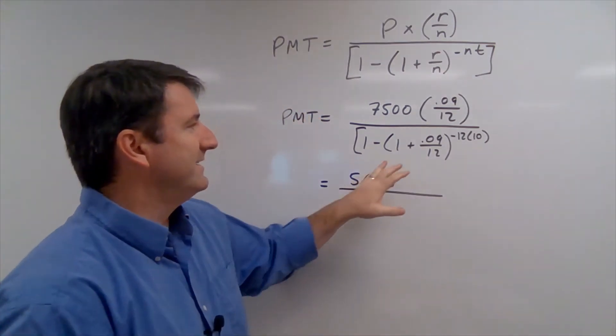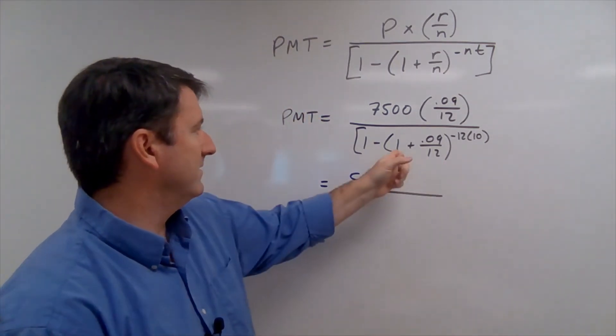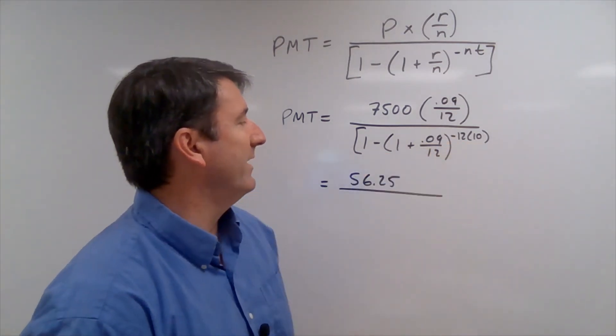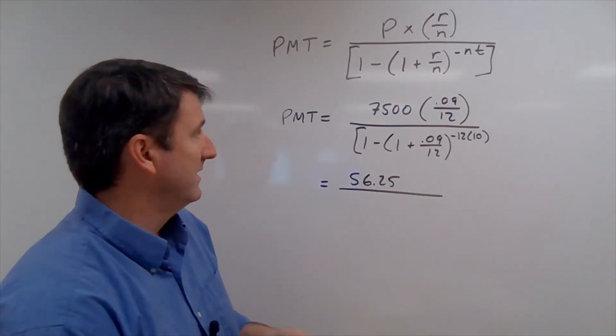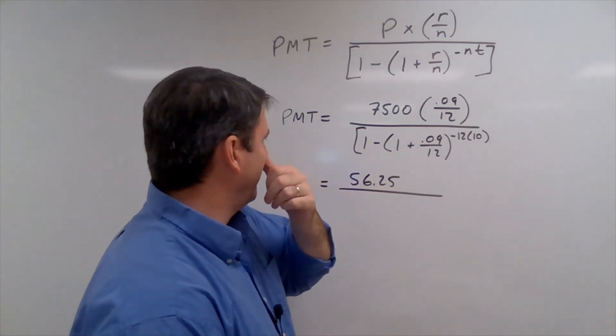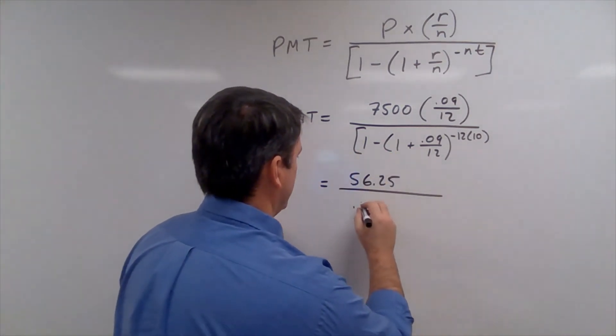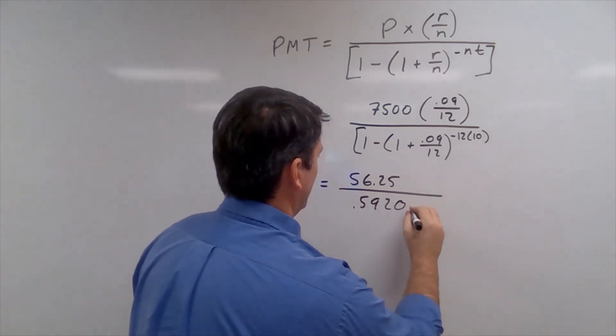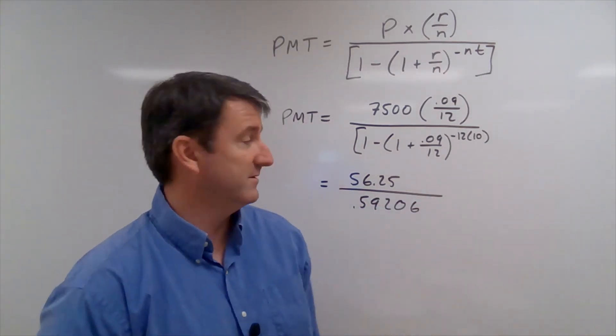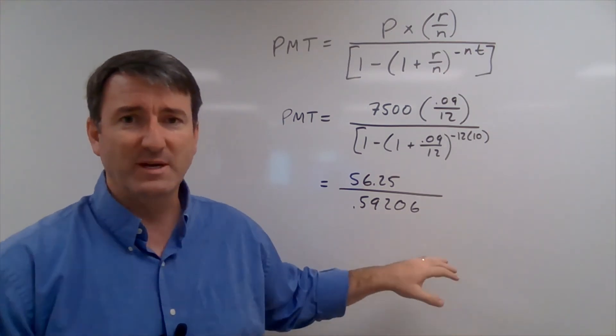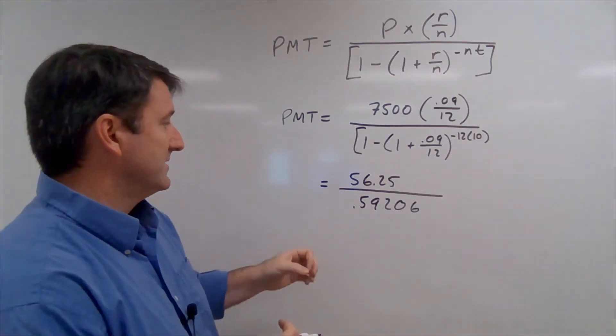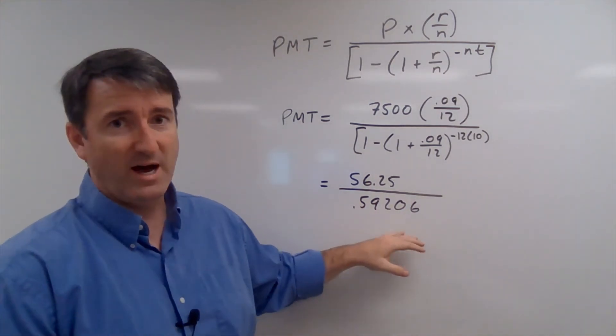Then in the denominator, this is going to be 1.0075 taken to the negative 120th power. And then if we subtract that from 1, we're going to get 0.59206 and some other stuff. We want to carry this out as much as we can or use a memory function in our calculator so that we're capturing as much of this as possible.